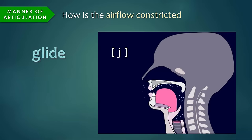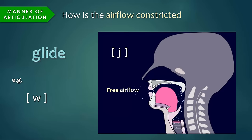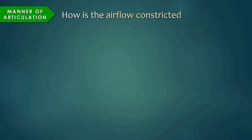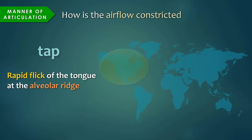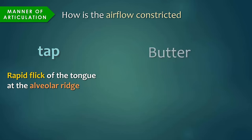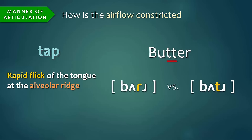Glide sounds are produced with very little constriction of airflow — so little, in fact, that they are often referred to as semivowels, such as w, y. Finally, we have tap sounds. Tap sounds involve a rapid flick of the tongue to some place of articulation. In North American English, we only really have one tap, and that's at the alveolar ridge. You can hear the tap sound in the word butter. Notice where we write it with two t's in English, your tongue is producing a tap sound there, rather than a full stop or plosive sound. In North American English you say butter, as compared to in received pronunciation, where you say butter, which involves a full t-stop.